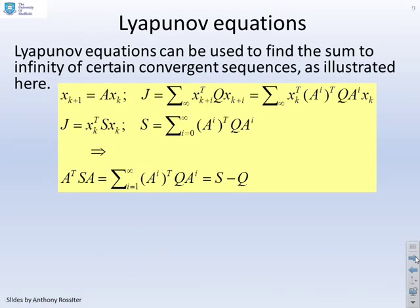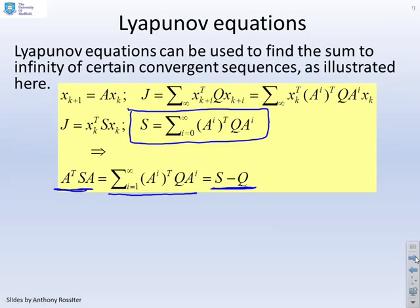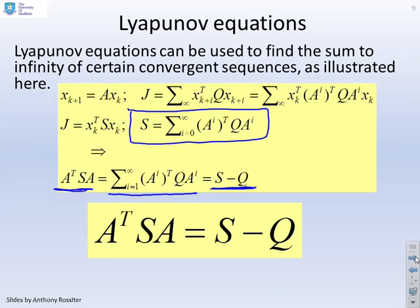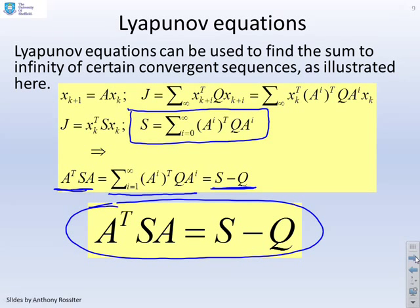Now, a bit of an aside, because we're going to need this. If you have an infinite sum, something like this, the bit I'm just circling here, s equals the sum from i equals 0 to infinity, a to the power i transposed q a to the power i. Now, assuming, obviously, that a to the power i is convergent, goes to 0, then you can show that if I write a transposed sa, then it's the same as doing the sum from i equals 1 to infinity of a to the i transposed q a to the i, which is the same as doing s minus q. In other words, you can solve for s using this equation here. And the key thing is this s is the sum of an infinite number of terms, but I can solve for it using simple linear equalities. And this is called the Lyapunov equation.